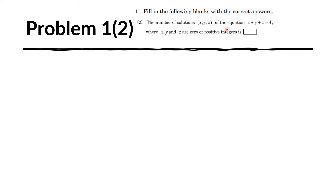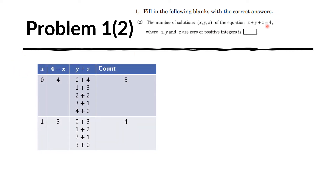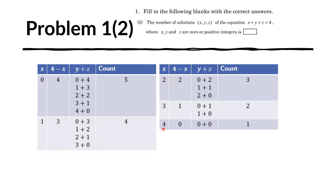For problem 2, we are told that the equation x plus y plus z equals 4 has integer solutions for x, y, and z, and that these values are all either positive or 0. Let us list down the possible values of x: only 0, 1, 2, 3, and 4. That is because if x were 5 or beyond, then 5 plus y plus z can never equal 4 if y and z are non-negative. And x cannot be negative as the problem states solutions are only 0 or positive integers.